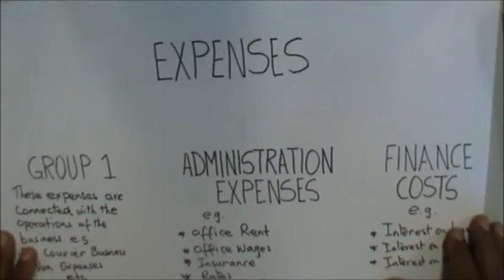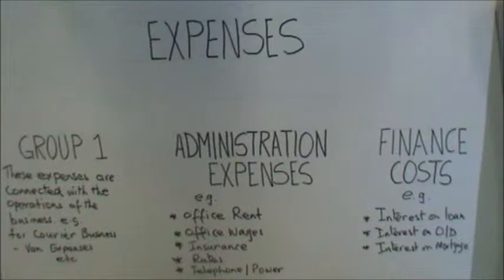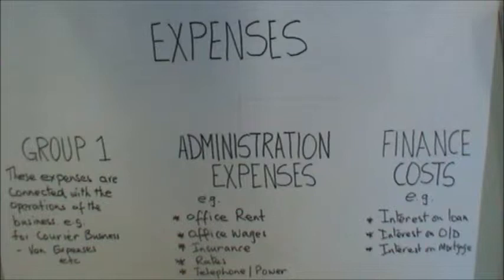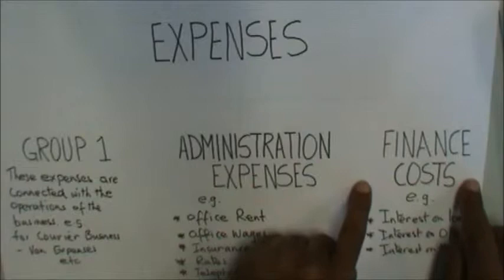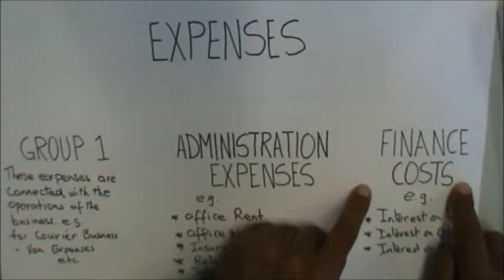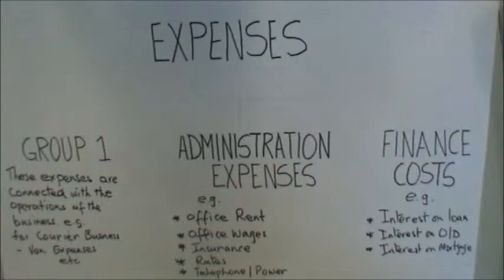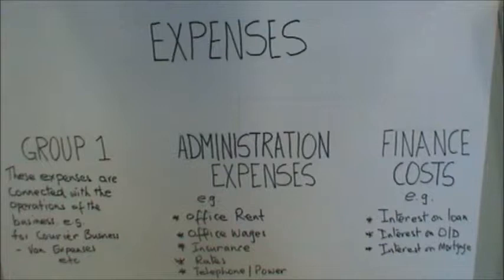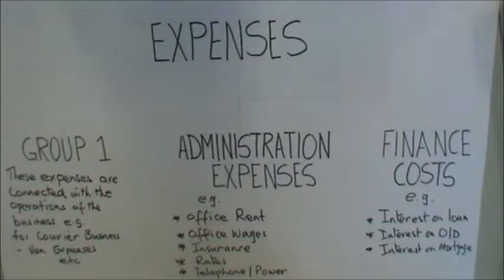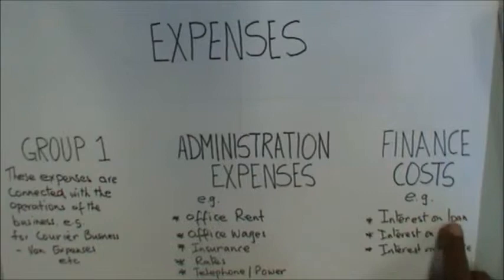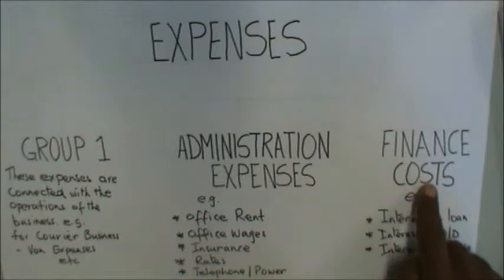Expenses of a service business will be reported under three categories. The first category is called finance costs. Finance costs only includes expenses related to raising finance. When you raise finance, you take loans, and when you take a loan, you have to service the debt — that servicing is called paying interest. So finance costs only includes interest: interest on a loan, overdraft, or mortgage.